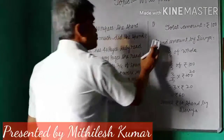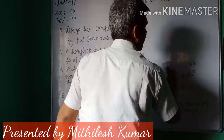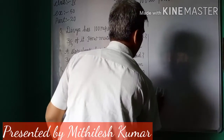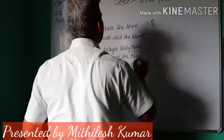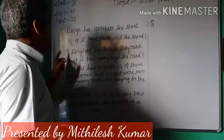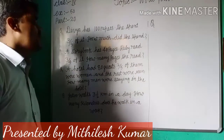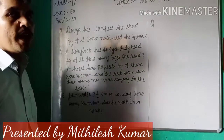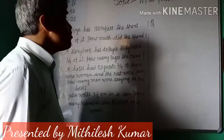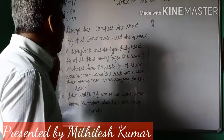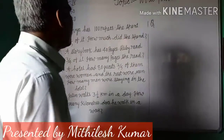Now next question. Dear students, at first I read the question: A story book has 40 pages. Ruby reads 3 by 4 of it. How many pages does she read? Number of pages in the story book is 40.